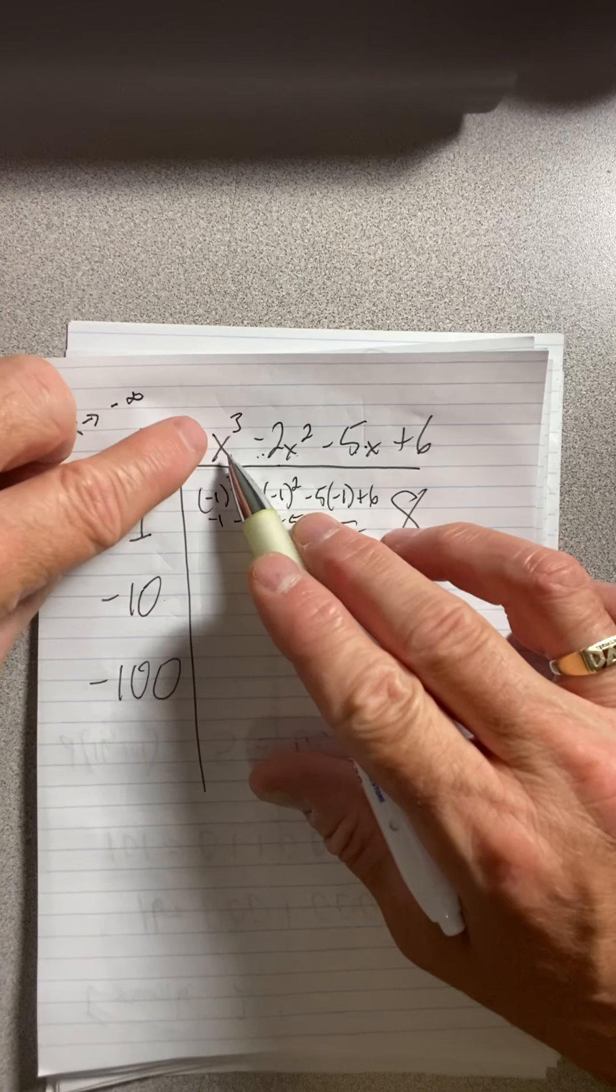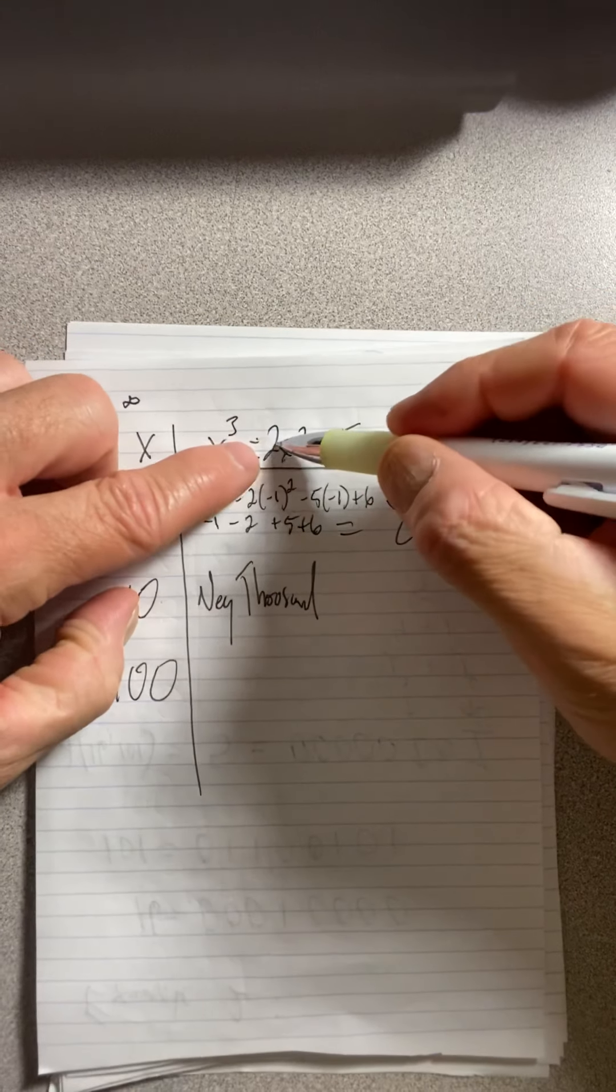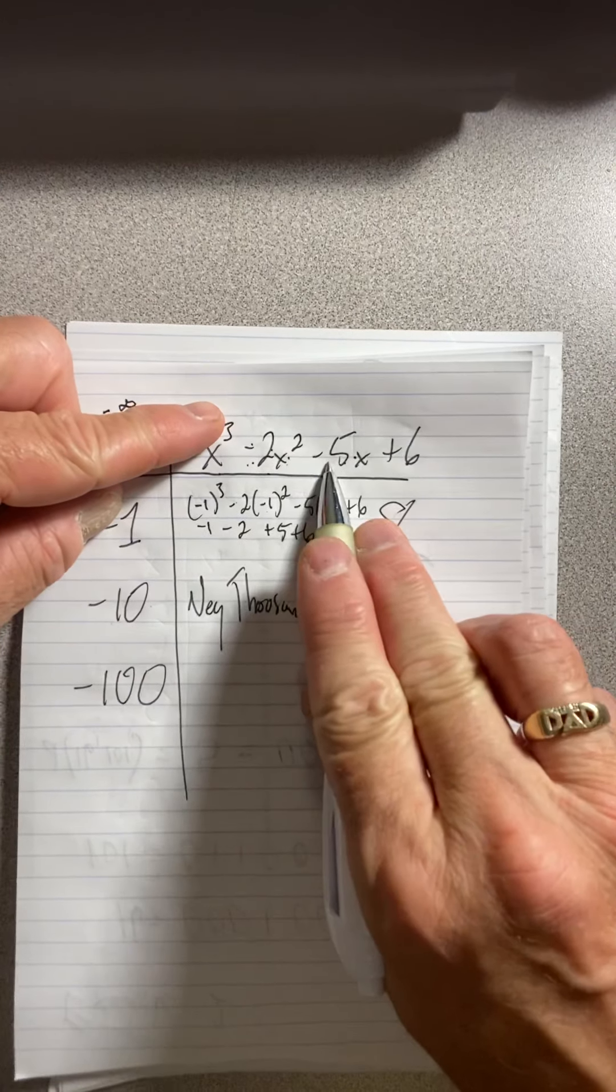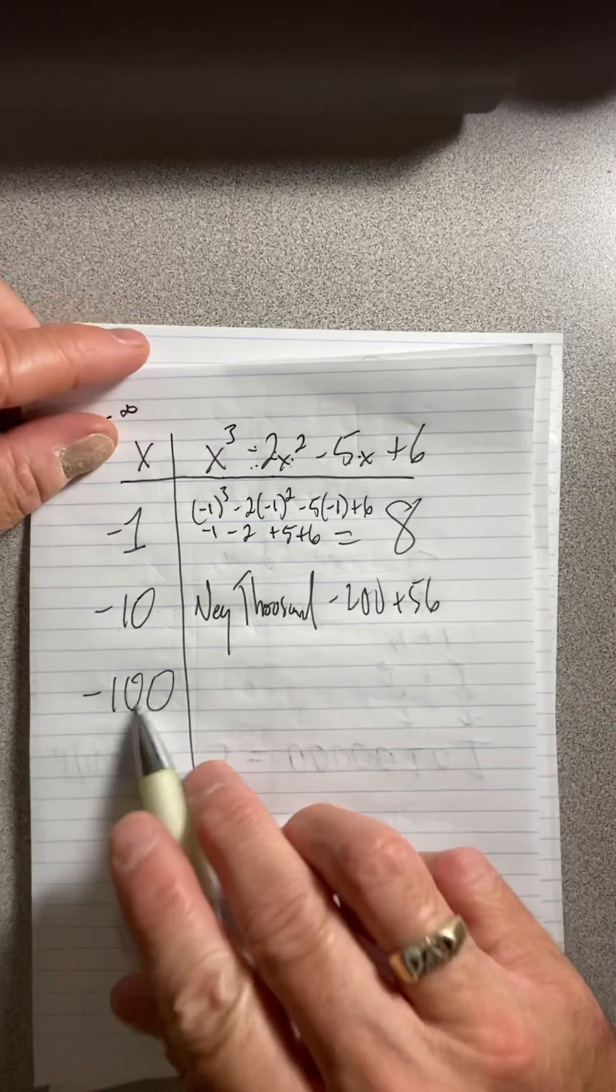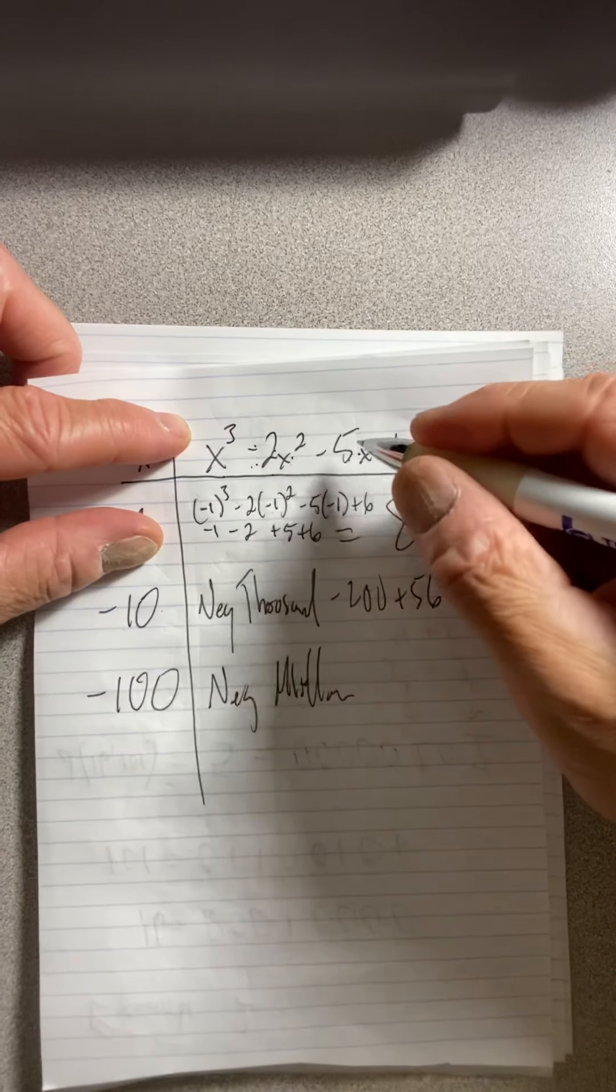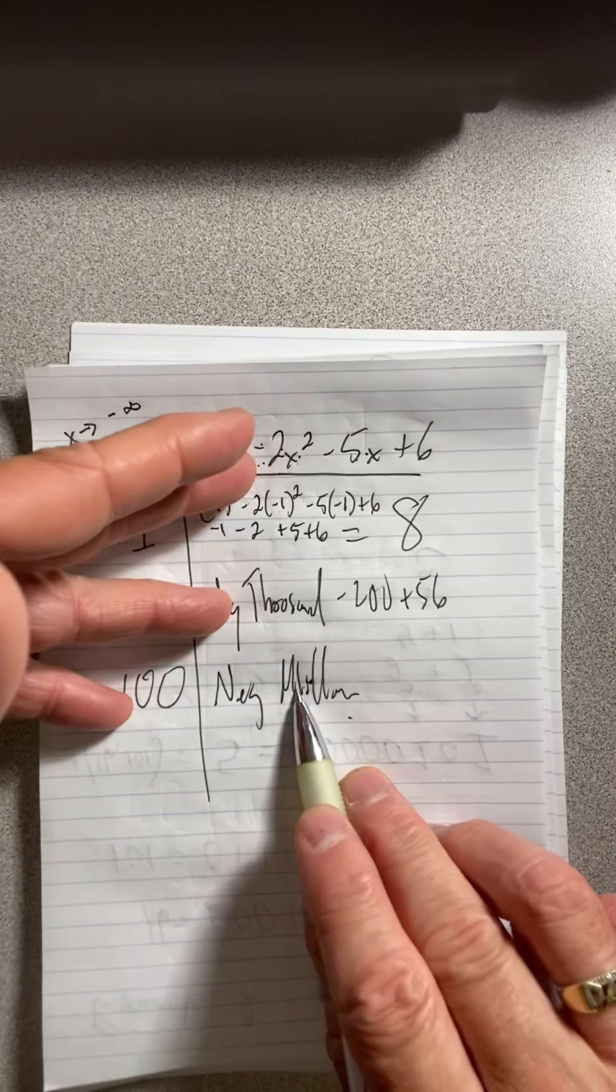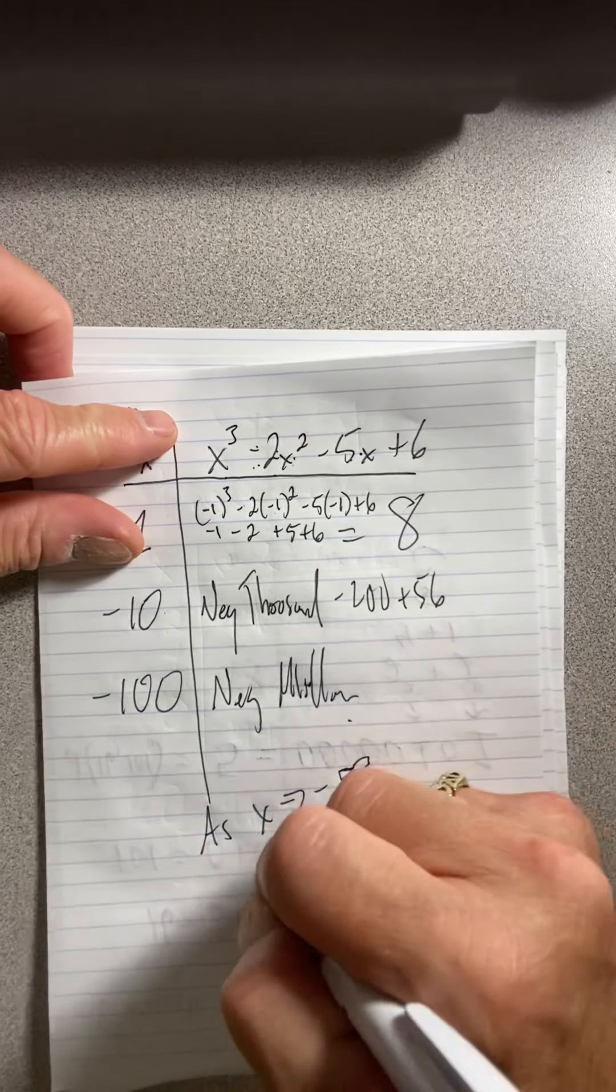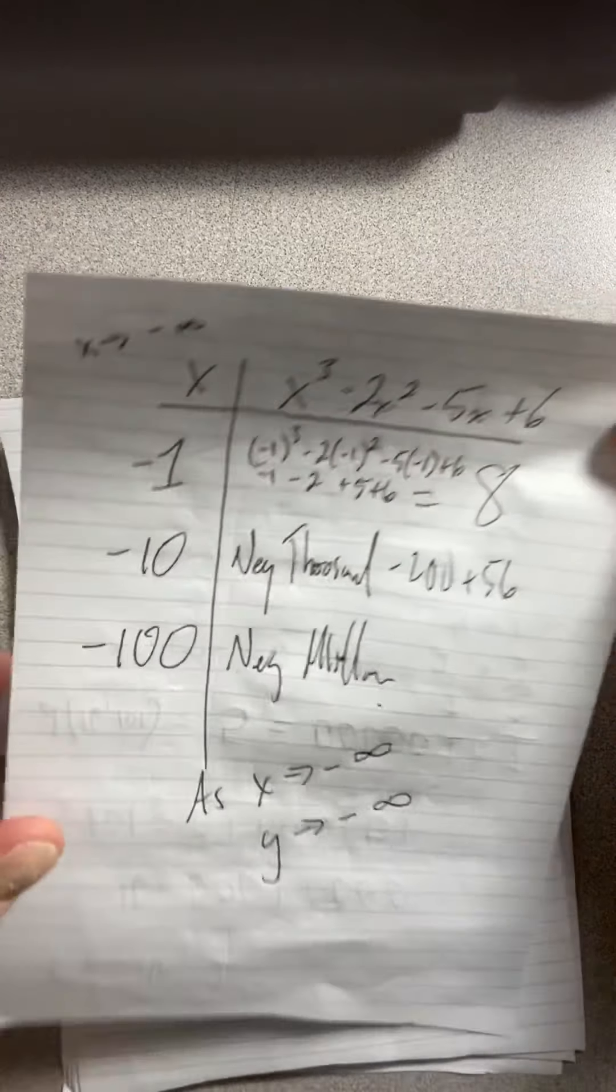What if I put in a negative 10? Oh my gosh, that's 1,000. And then if I put a negative 10 here, you square it, you get a positive 100. So I have a negative 1,000. But I'm taking away 2 times 100. So I'm taking away a mere 200. Then I'm adding back in, because a negative times this negative 5 would be 50. So I'm adding back in 56. In other words, it's near a negative 1,000. What happens if I put in a negative 100? Well, I'm going to get negative 1,000,000. I don't think any of this is going to matter. This is so big. This is a mere 20,000 compared to a million. This is just negative 1,000,000. So what's happening? As x goes to negative infinity, the y values are also going to negative infinity.